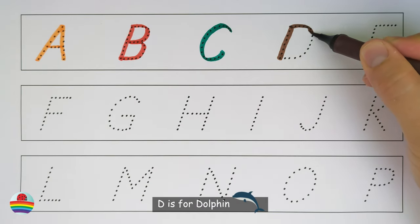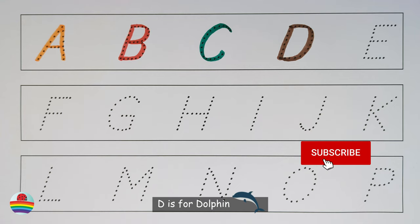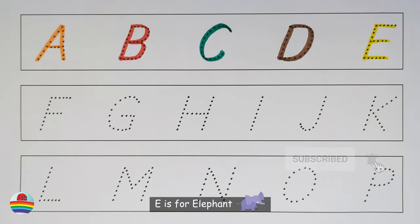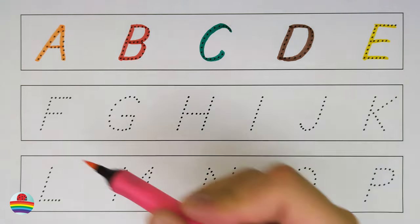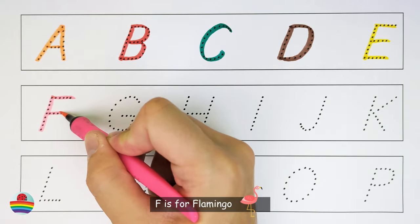D is for dolphin. E is for elephant. F is for flamingo.